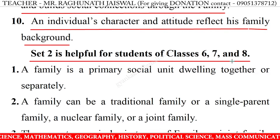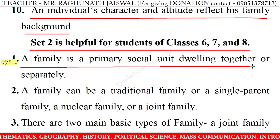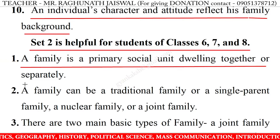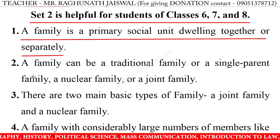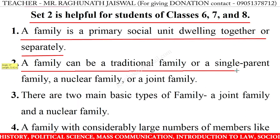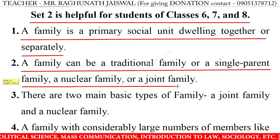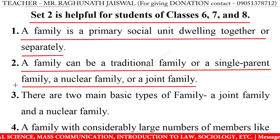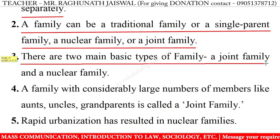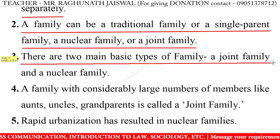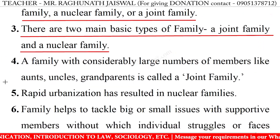Set 2 is helpful for students of Classes 6, 7 and 8. 1. A family is a primary social unit dwelling together or separately. 2. A family can be a traditional family or a single parent family, a nuclear family or a joint family. 3. There are two main basic types of family, a joint family and a nuclear family.